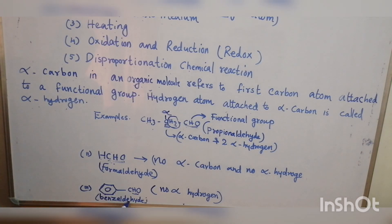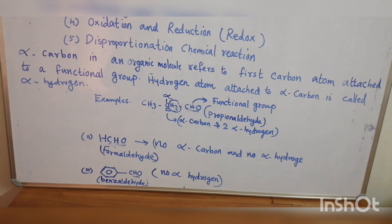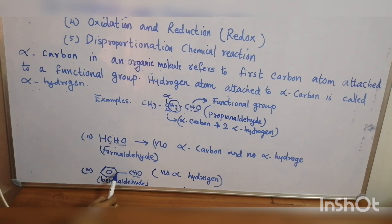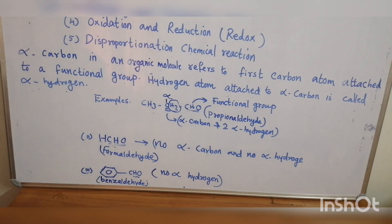Now let us see benzaldehyde. Benzaldehyde is C6H5-CHO. CHO is the functional group, and it is connected to a carbon in the benzene ring with no hydrogen atoms. So formaldehyde and benzaldehyde are aldehydes lacking alpha-hydrogen atoms, whereas propionaldehyde has two alpha-hydrogen atoms.